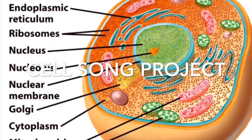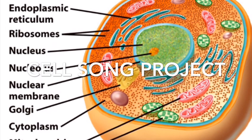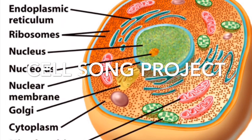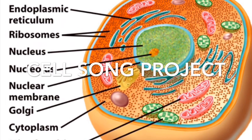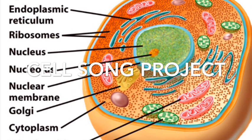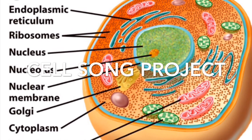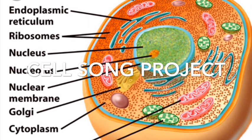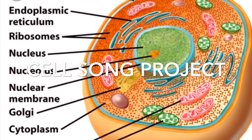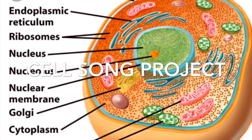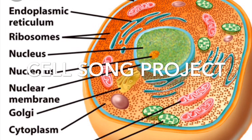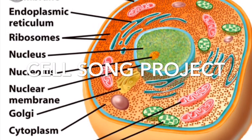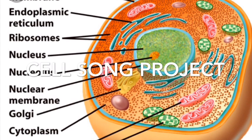Vacuoles are the storage room of the cell — they store and force out material. Next come lysosomes: they break down material and throw away old organelles. The cytoskeleton is the cell's main structure and helps move material around.